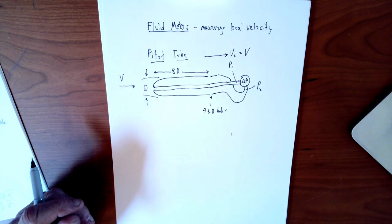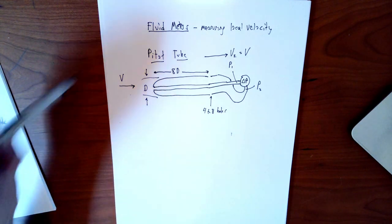We're going to look at a few ways to measure local fluid velocity. We have called this the fluid meter section.